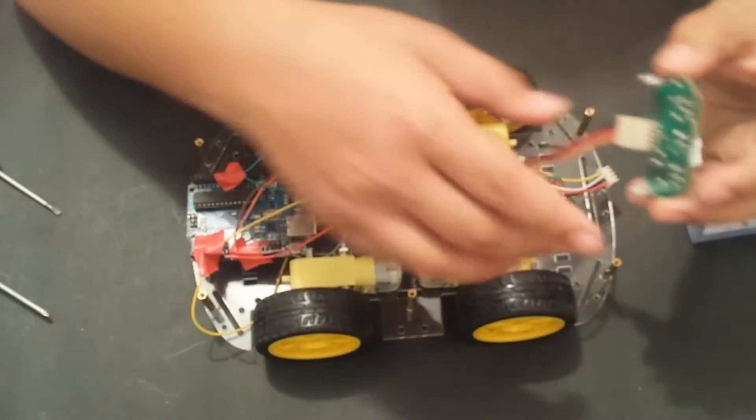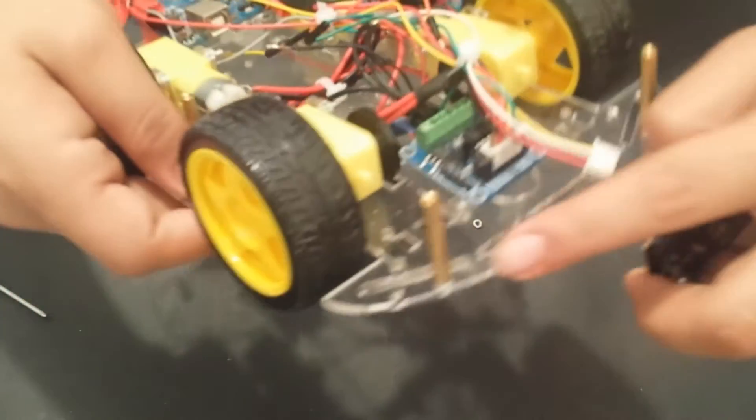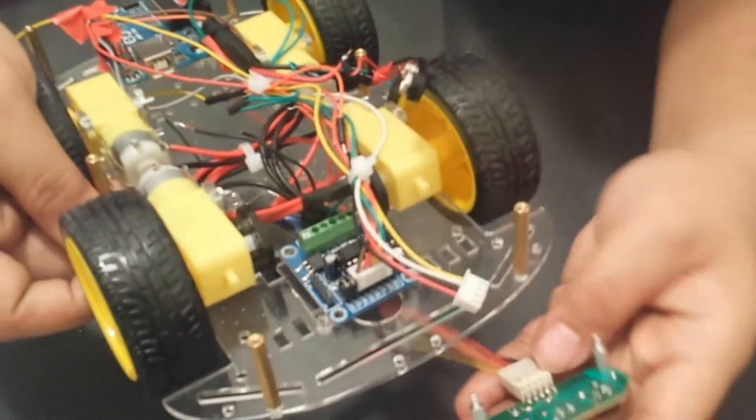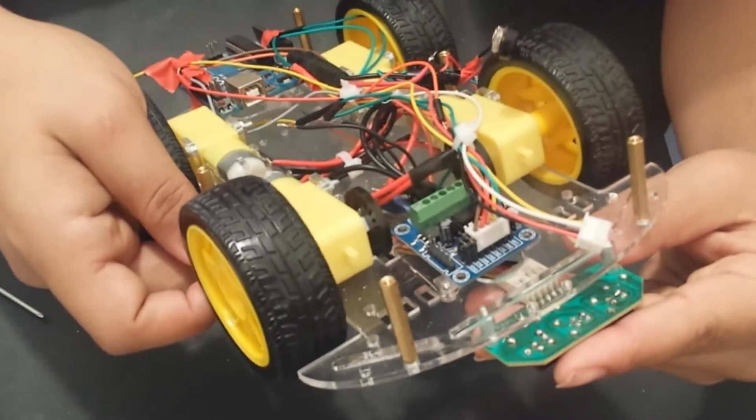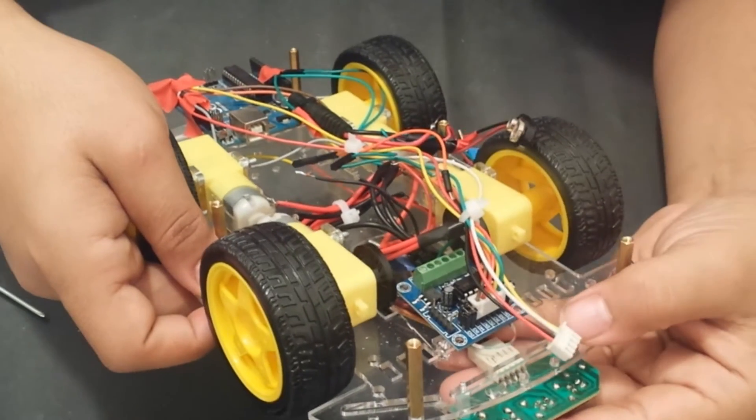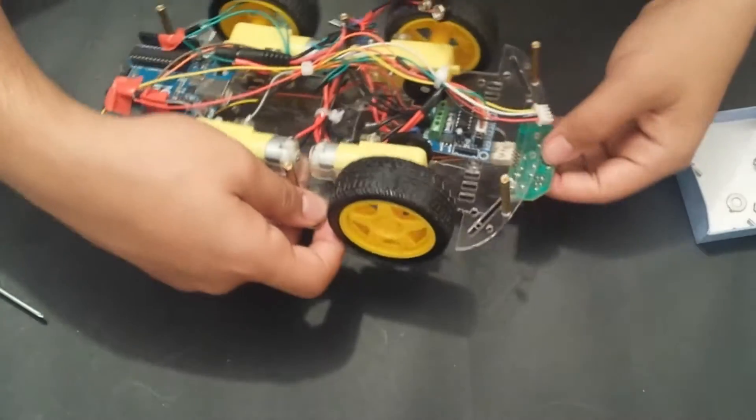I will be mounting the line following sensor on this groove right here on the chassis. I can move it until it is centered and then I will use two nuts to support it in place.